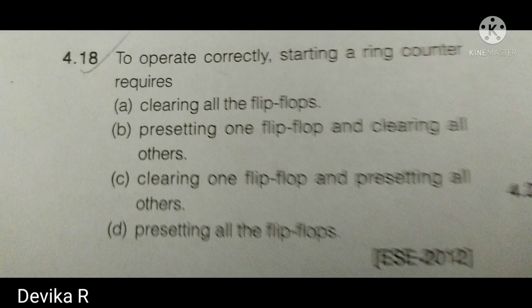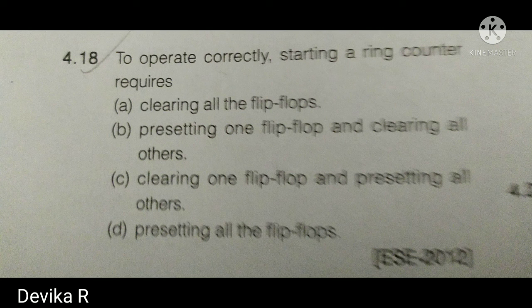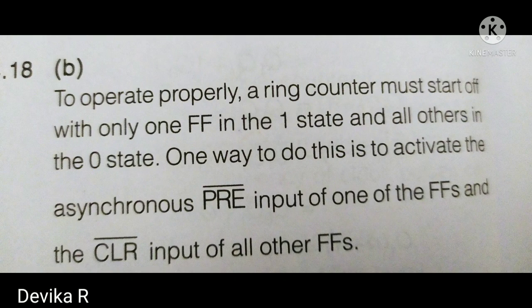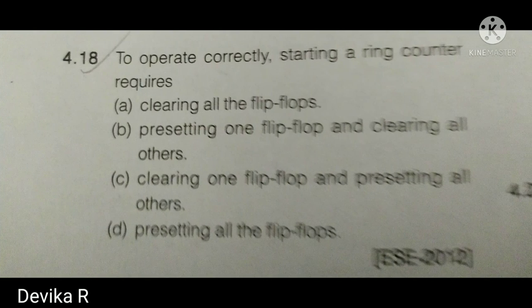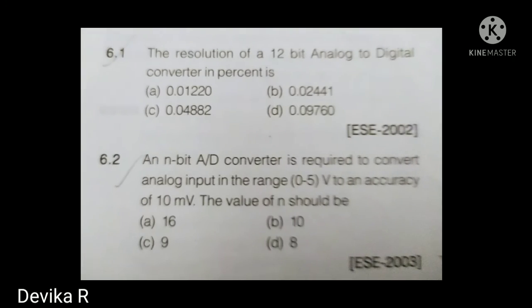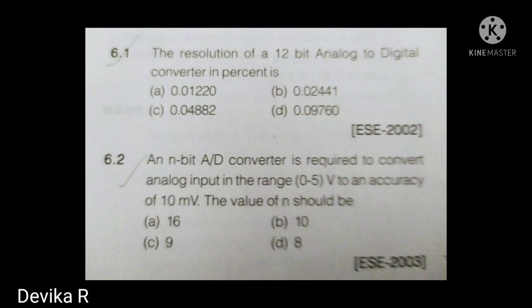Next: to operate correctly, a ring counter requires pre-setting for the first pulse. After that, only the clock is given and the ones are shifted to the right. Pre-setting one flip-flop and clearing all the others is the correct requirement. So to operate properly, the ring counter first sets one state and clears all other states. The answer is B.